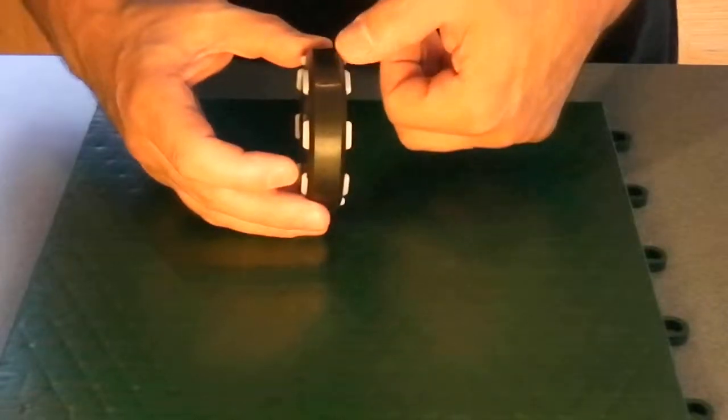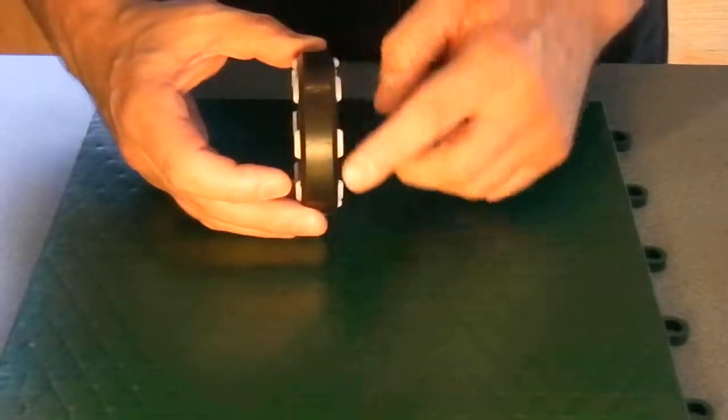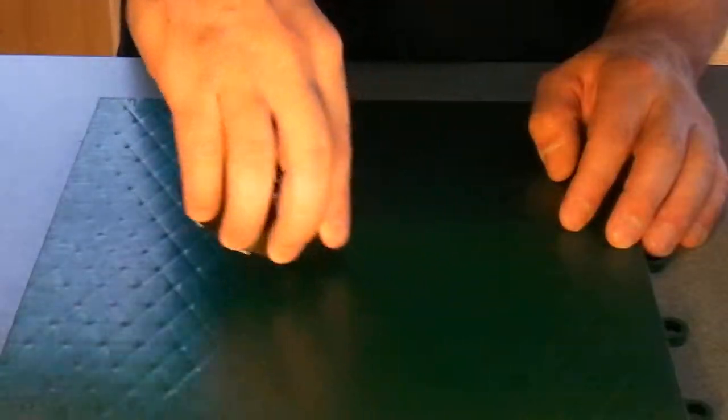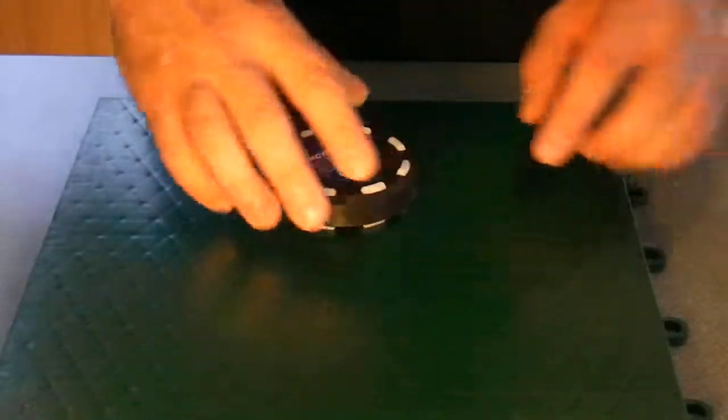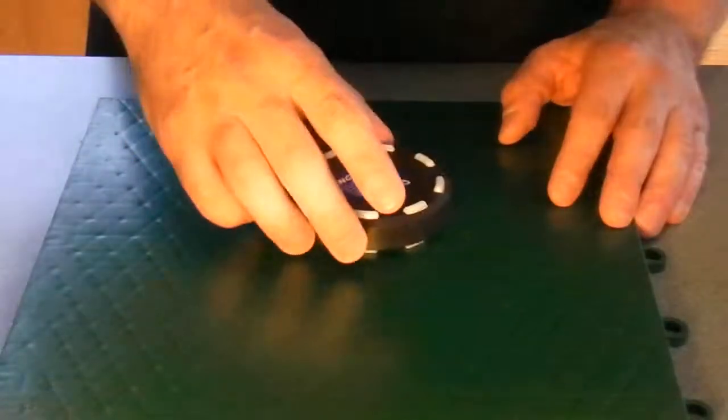And because we have the bevel, this part of the puck, the outer part of the puck, which has the higher coefficient of friction, doesn't come in contact as much with the playing surface as the rocket puck does.